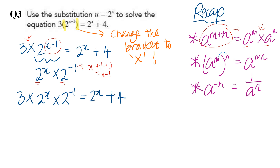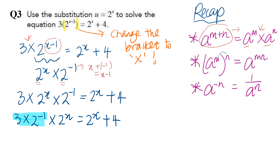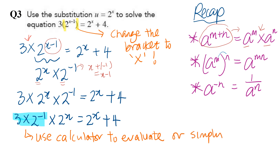We put them together, then rearrange — put all the integers together: three and three, and two to the power of negative one together. You can use a calculator, or simply note that two to the power of negative one gives you one over two, which is a half. So three times a half gives you three over two.